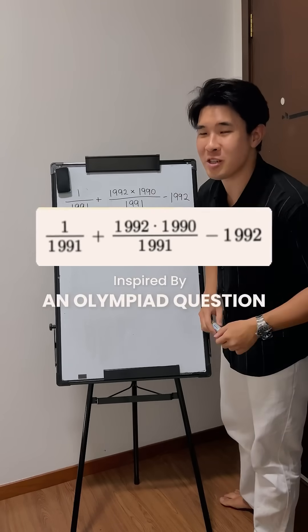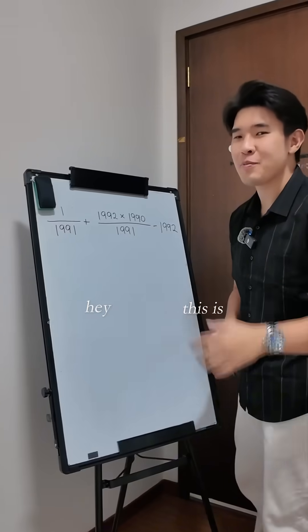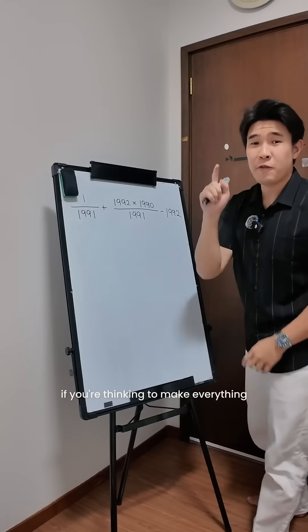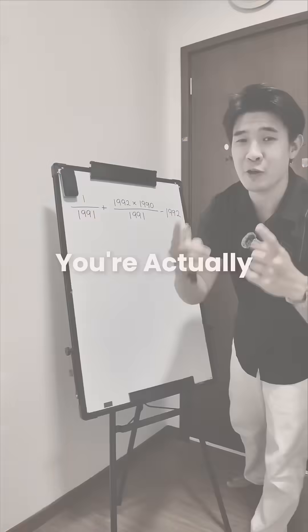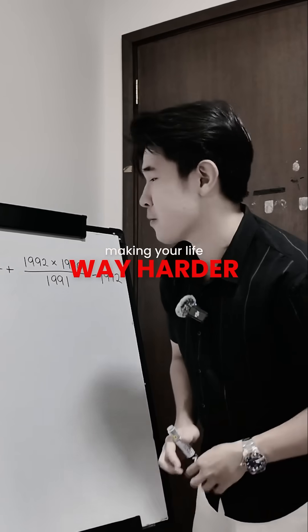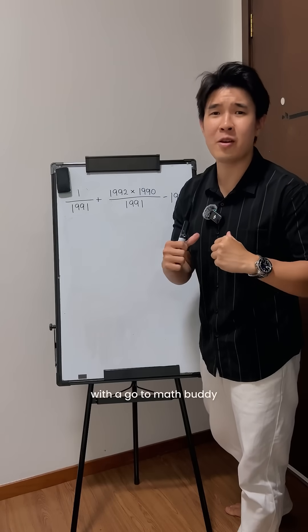Inspired by an Olympiad question. Let's see if you can solve this. Hey, this is Michael, your go-to math buddy. Now, if you're thinking to make everything to have a common denominator of 1,991, you're actually making your life way harder. Let's make your life easier with your go-to math buddy.